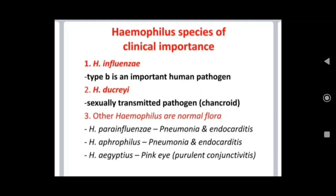Haemophilus species of clinical importance: first, Haemophilus influenzae type B is an important human pathogen. Next is Haemophilus ducreyi, a sexually transmitted pathogen causing chancroid. Other Haemophilus species are normal flora — H. parainfluenzae may cause pneumonia and endocarditis, Haemophilus aphrophilus causes pneumonia and endocarditis, and Haemophilus aegyptius causes pink eye, also called purulent conjunctivitis.